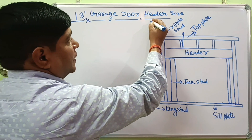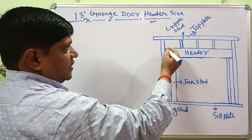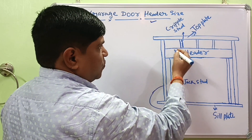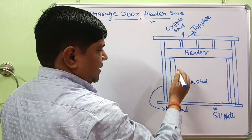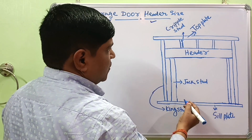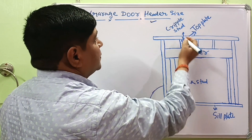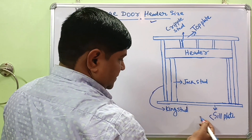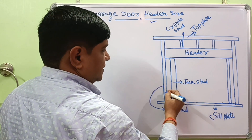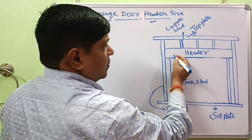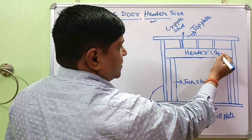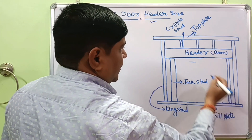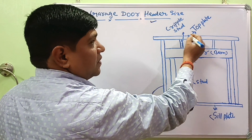Here is the rough diagram of a wooden frame house. As you know, most cold-region countries like the United States and other European countries have houses built of wooden frame structure. Here is the rough diagram for the garage door header. This one is the bottom plate, known as the sill plate. This one is the jack stud, and this is the king stud, which supports the load coming from the header. This is the header, which acts as a beam-like structure placed over the opening of the door.